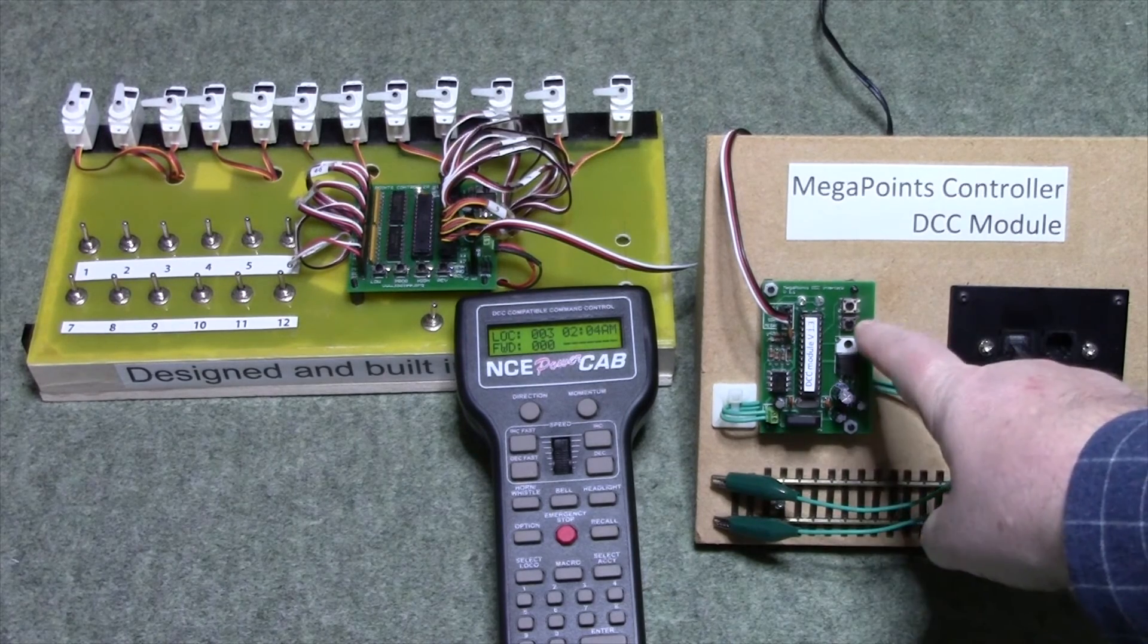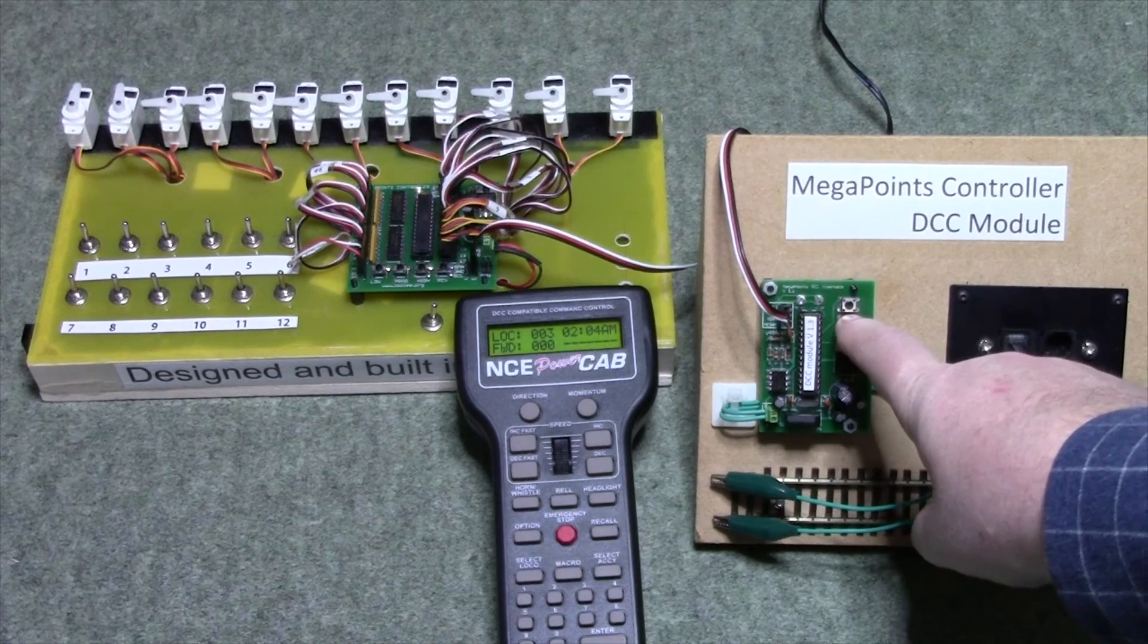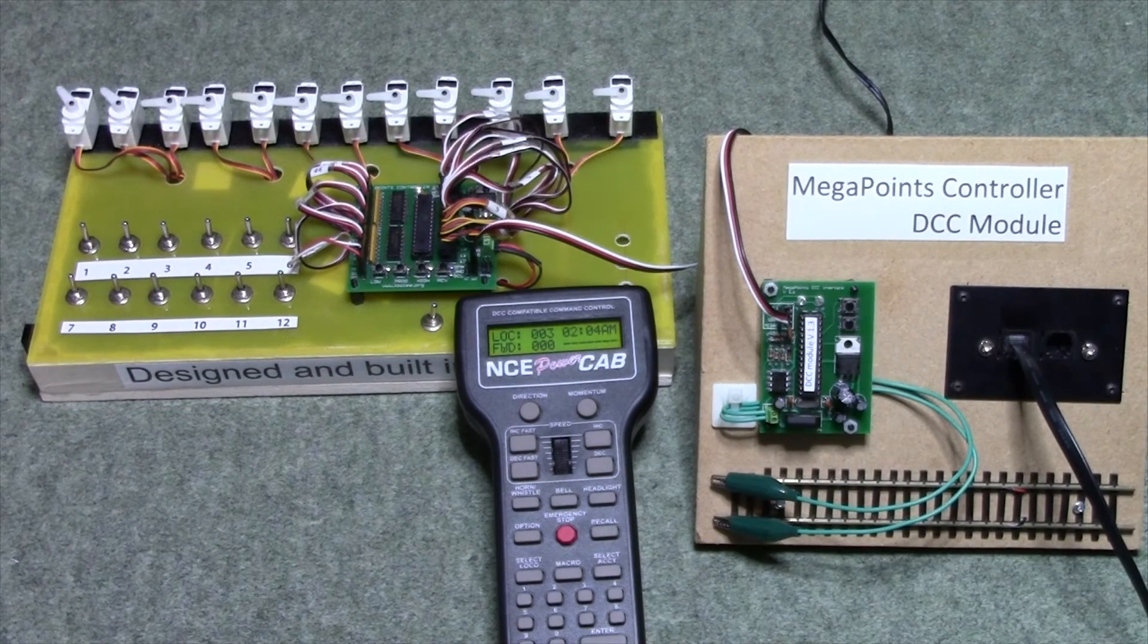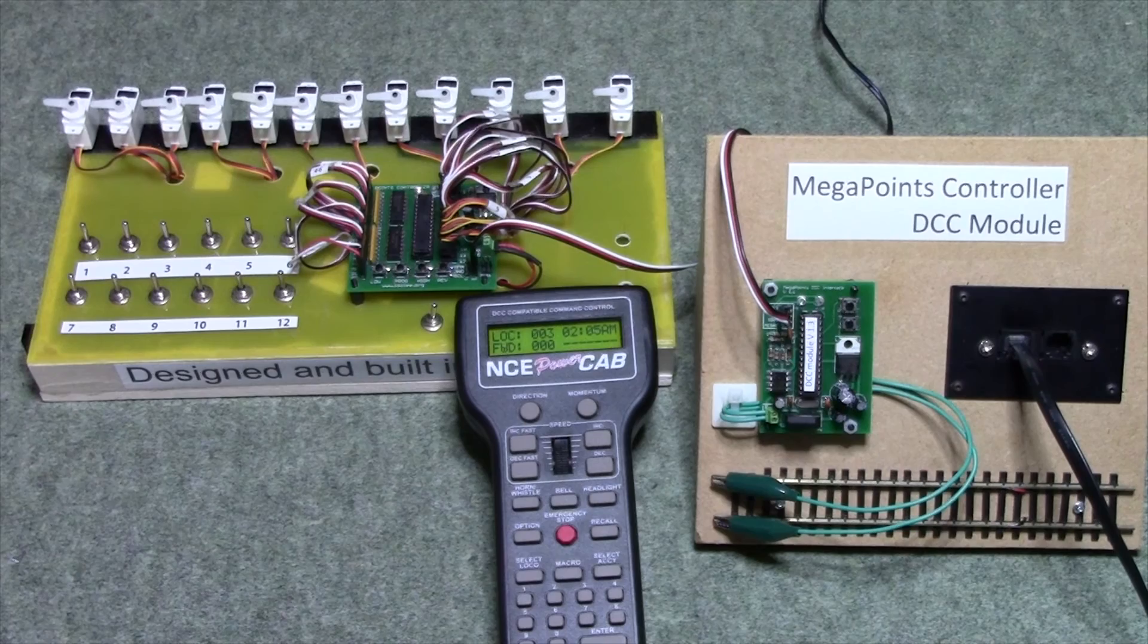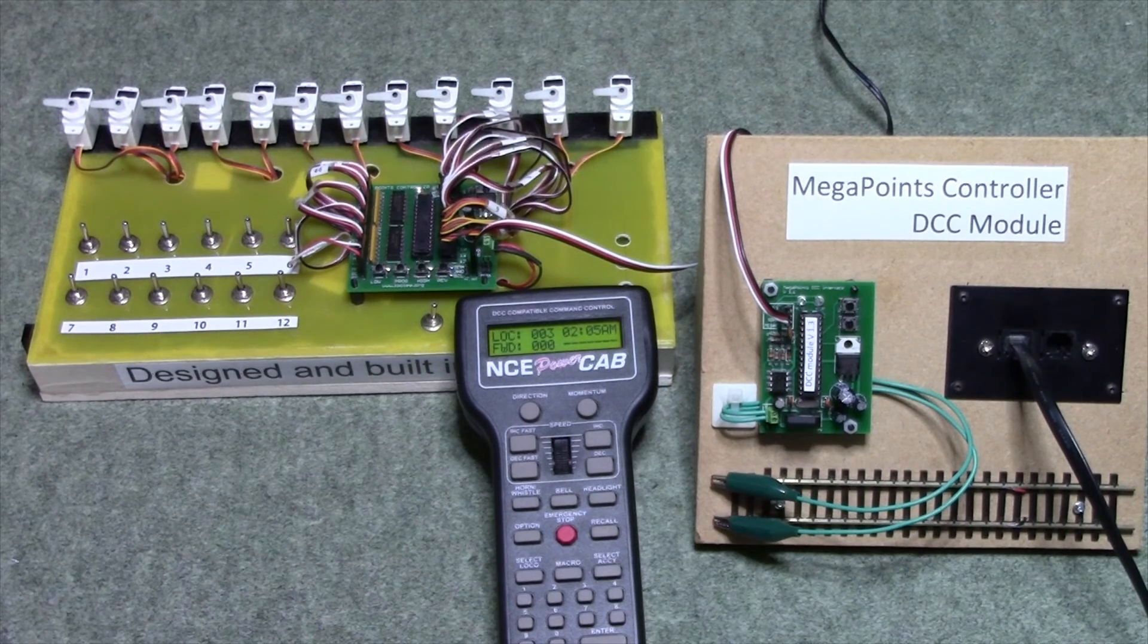To change mode, press the bottom button and hold it for a second. When the orange light flashes, the unit restarts and the right hand light is flashing. It's now in gateway mode.